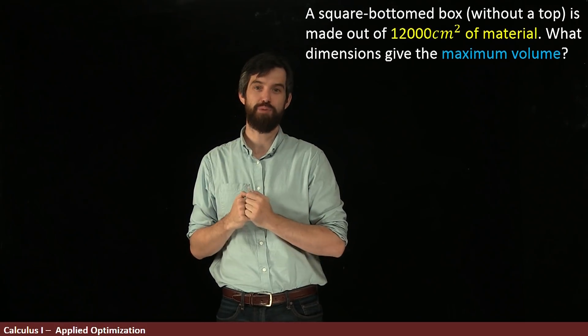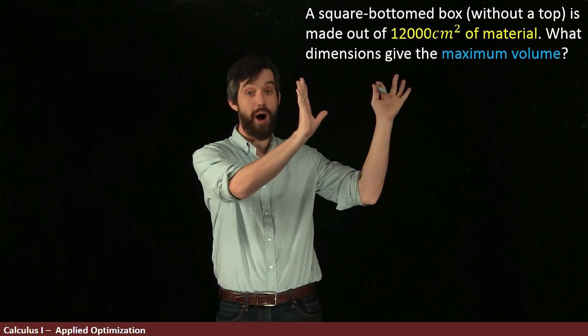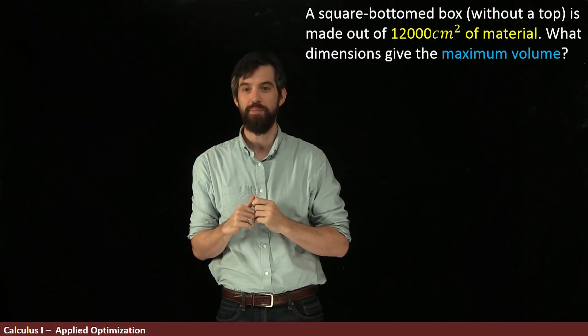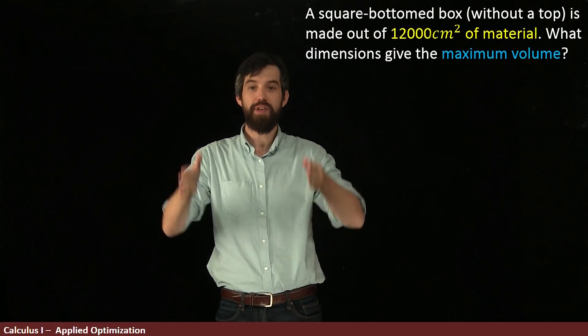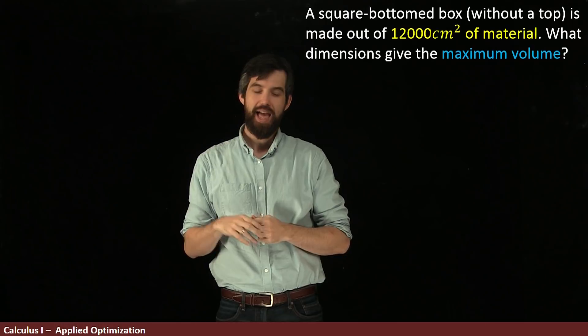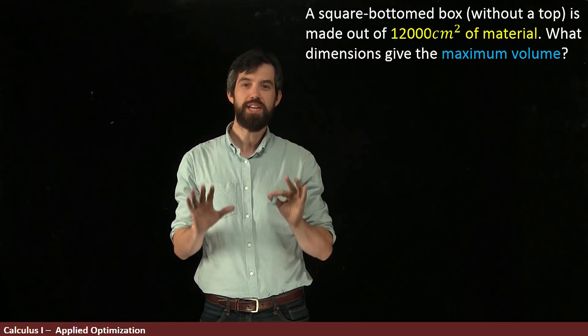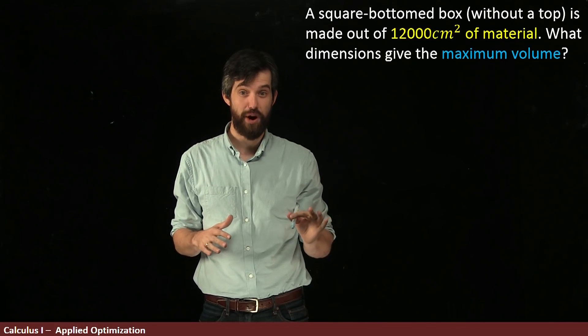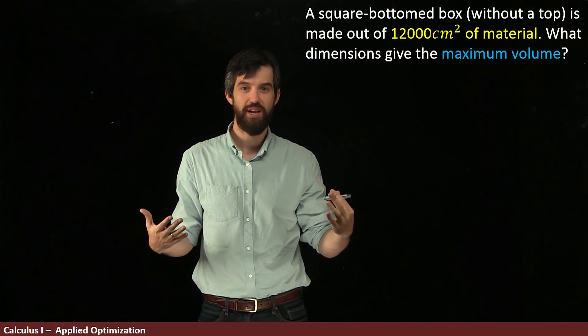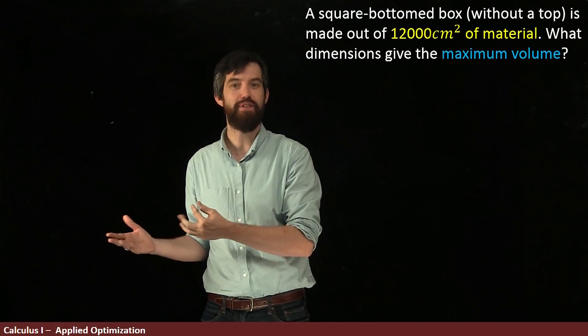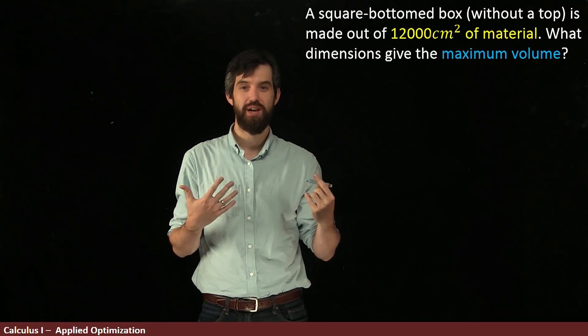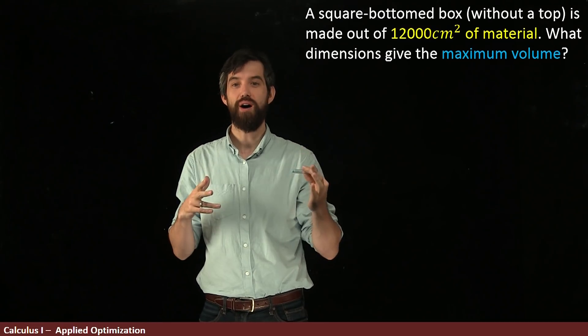Now, in this first optimization problem we're going to look at, I'm going to talk about a box. It is a square bottom box, so the bottom is a perfect square. Then it goes up some height, and it has no top, but it does have a bottom. Now, the first step of most optimization problems is to draw a picture. We want to put all the labels down for our variables and just have a very clear picture of what's going on. So let's draw a box.